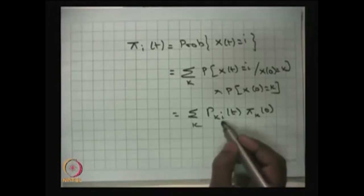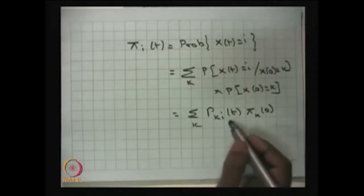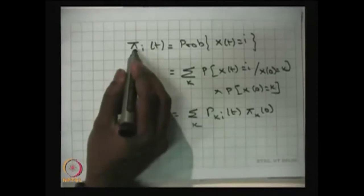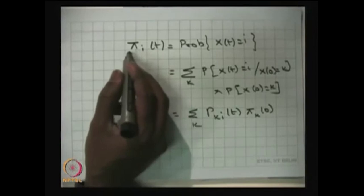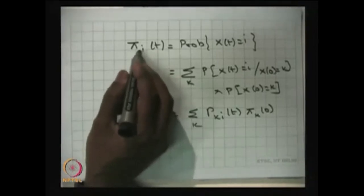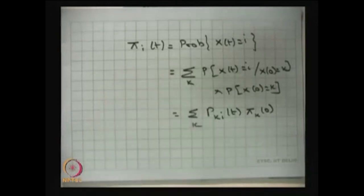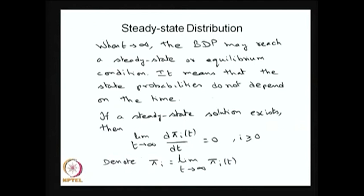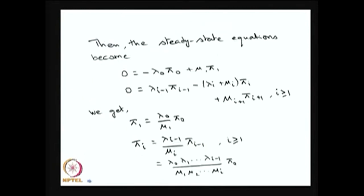Using p(k,i) of t — the conditional probability — one can get the unconditional probability pi_i(t), which is the distribution of X(t), i.e., the probability mass function at state i. Whenever the steady state distribution exists, it is independent of time t, so as t tends to infinity, pi_i(t) can be written as pi_i. Whenever the steady state solution exists, the limit as t tends to infinity of the derivative of pi_i(t) is equal to 0. I will use these two facts to get the steady state probabilities for the birth-death process.